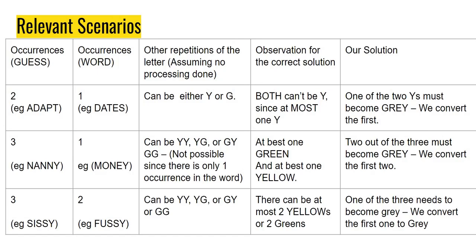Remember, the problem is when I have more repetitions in the guess word compared to the chosen word. I look at three scenarios: chosen word has one repetition, chosen word has two repetitions, and guest word has two or three. For example: chosen word 'dates' has one A, guess 'adapt' has two A's; chosen word has one N, guess 'nanny' has three N's; chosen word 'fussy' has two S's, guess has three. We don't need to consider four or more repetitions because the word must be a valid word — which means it can have at most three repetitions. Narrowing down to these three cases brings a lot of clarity.